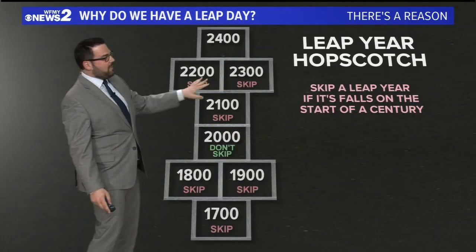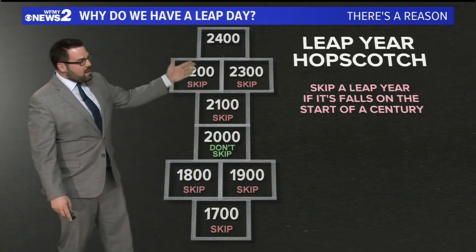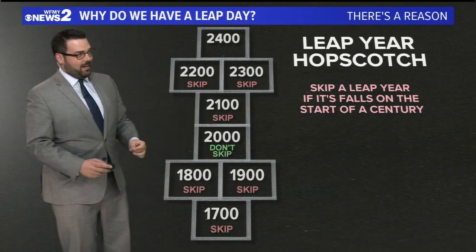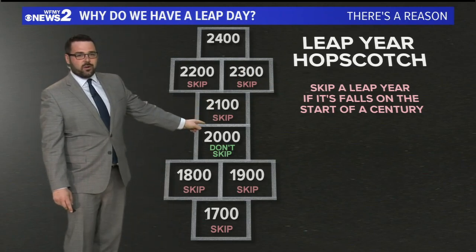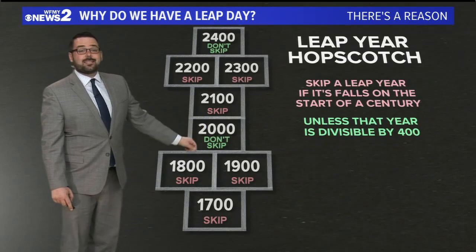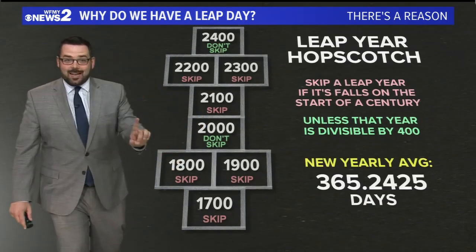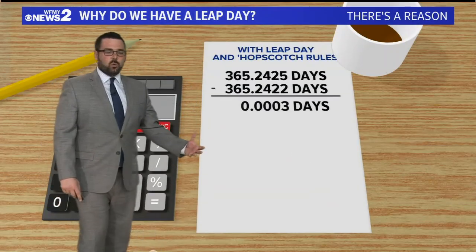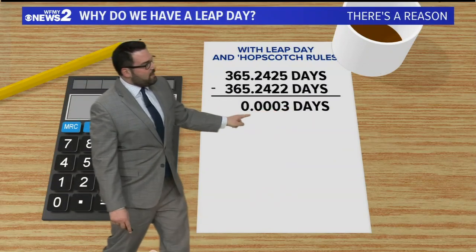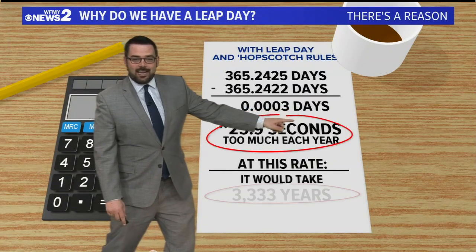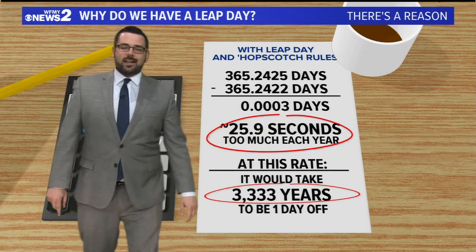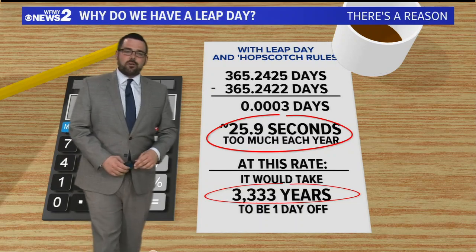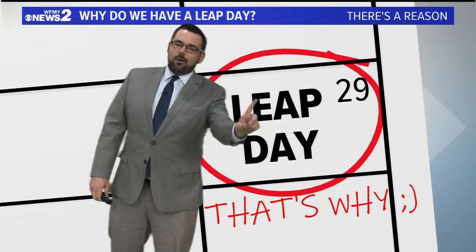So let's do some more. We call it Leap Year Hopscotch. With this, what you do is you skip the leap year if it falls at the start of a century. So in 2100, if we're still around, yes, there will be a skipped leap year — unless that year is divisible by 400. Bottom line, when you do all of that — the hopscotch rules, as we call it — you're only off by .0003 days. That's only 25.9 seconds. That's not a big deal because at that rate, it would take 3,333 years to be off by one day.